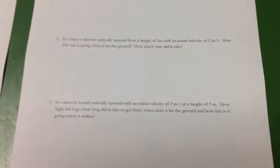An object is thrown vertically upward from a height of 2 meters with an initial velocity of 2 meters per second. How fast was it going when it hit the ground and how much time did it take?